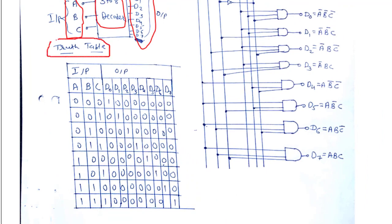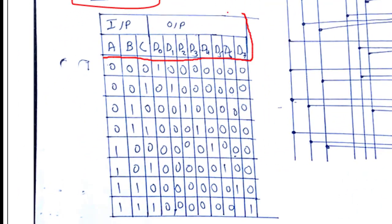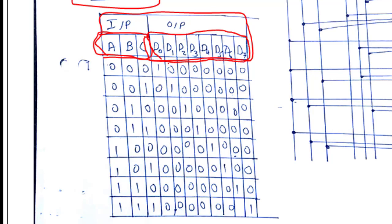This is the truth table of the 3-to-8 decoder. We have three input lines — A, B, and C — and from D0 to D7 we have a total of eight output lines. So we will get a total of eight instances or eight combinations. The first combination is triple zero: when all three inputs are low, we will get D0 as output.